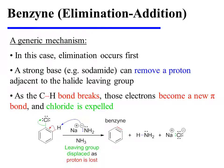In this case, the elimination occurs first. A strong base, such as sodamide, can remove a proton adjacent to the halide leaving group. As the carbon-hydrogen sigma bond breaks, those electrons become a new pi bond and chloride is expelled. This results in the formation of the intermediate known as benzyne, because of the presence of the triple bond.